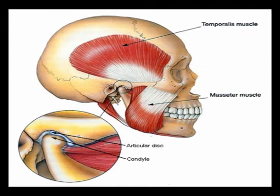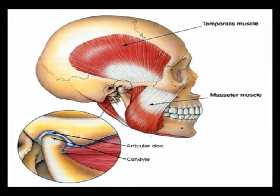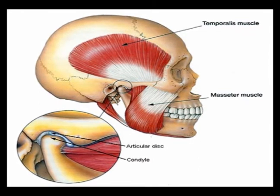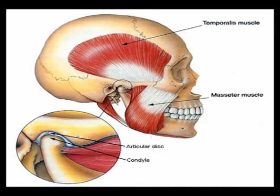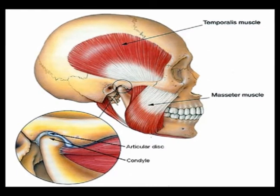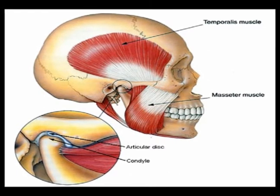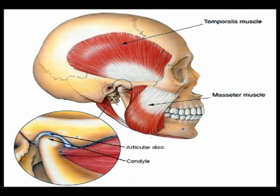The articular disc is a thin oval plate of fibrocartilage present in several joints. It separates the synovial cavities to allow for separate movements to occur in each space.